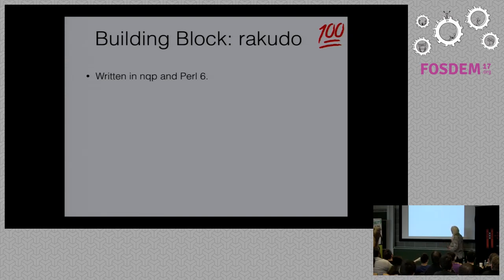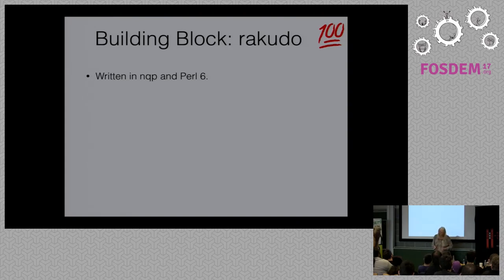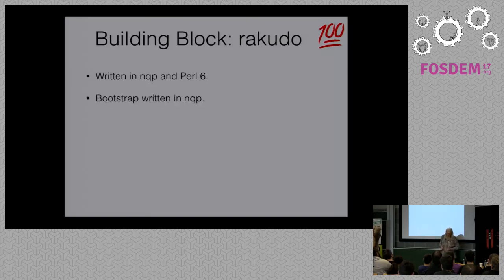Rakudo is actually written in NQP and Perl 6, and a tiny bit of C — but you don't really want to know about that. It's for very hot code paths that we've actually done that, and it's basically about 20 lines of C code, so it's not a lot.